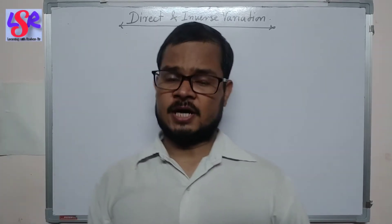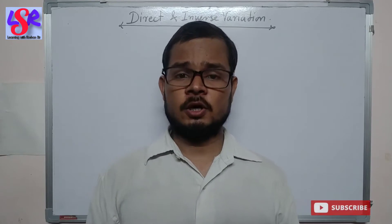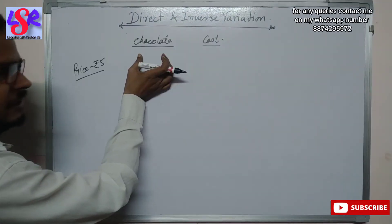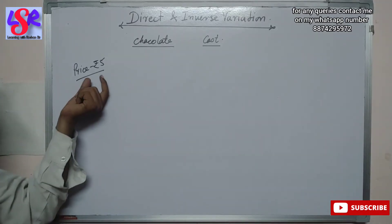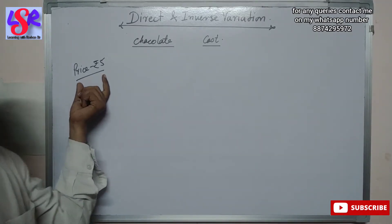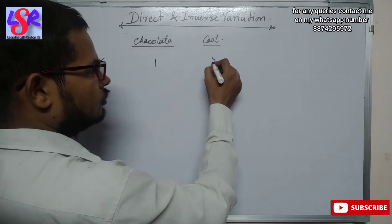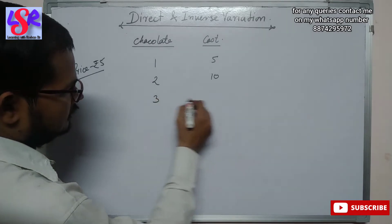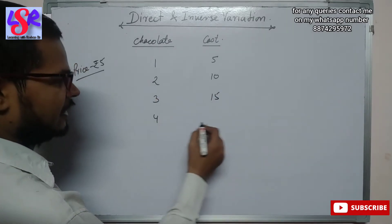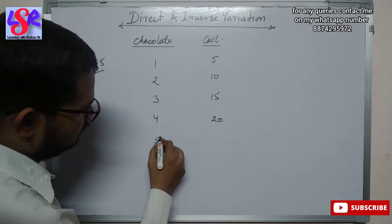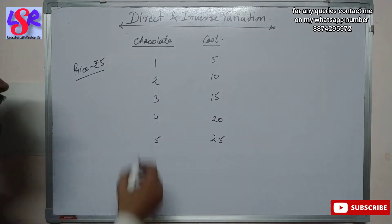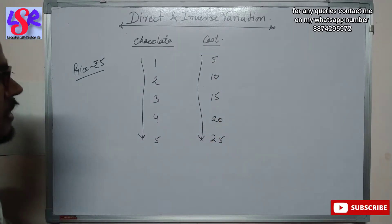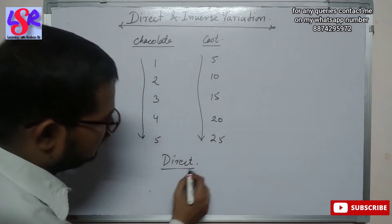We are going to start with a new topic: direct and inverse variation. To understand the difference, suppose we are purchasing chocolate at a price of five rupees each. If we take one chocolate we pay five rupees, two chocolates we pay ten rupees, three we pay fifteen, four we pay twenty, and five we pay twenty-five rupees. If we increase the number of chocolates, the cost also increases — this is a case of direct variation.